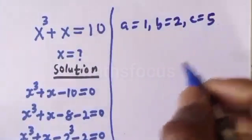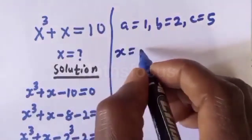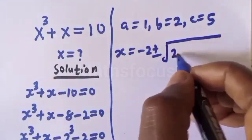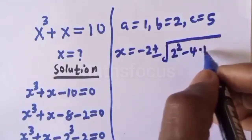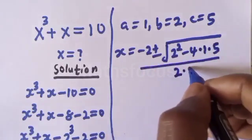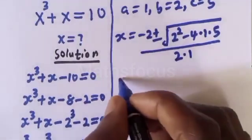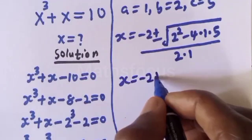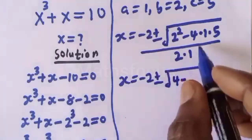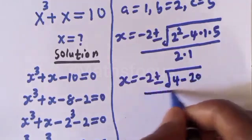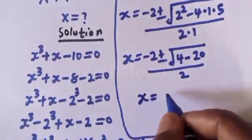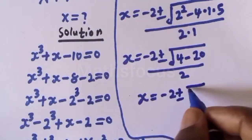Then we have s equal to minus 2 plus or minus square root of 2 squared minus 4 multiplied by 1 multiplied by 5, over 2 multiplied by 1. So s equals minus 2 plus or minus square root of 4 minus 20, over 2.